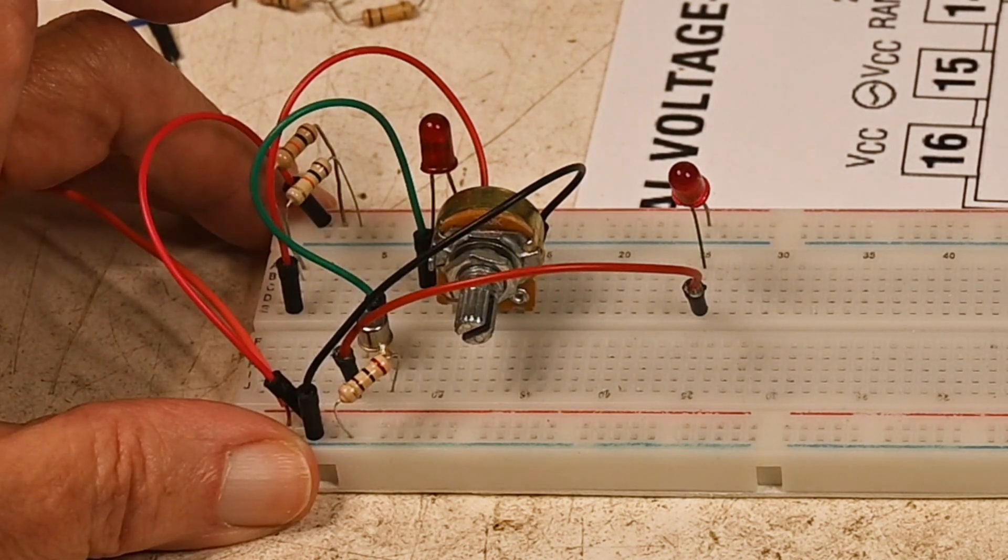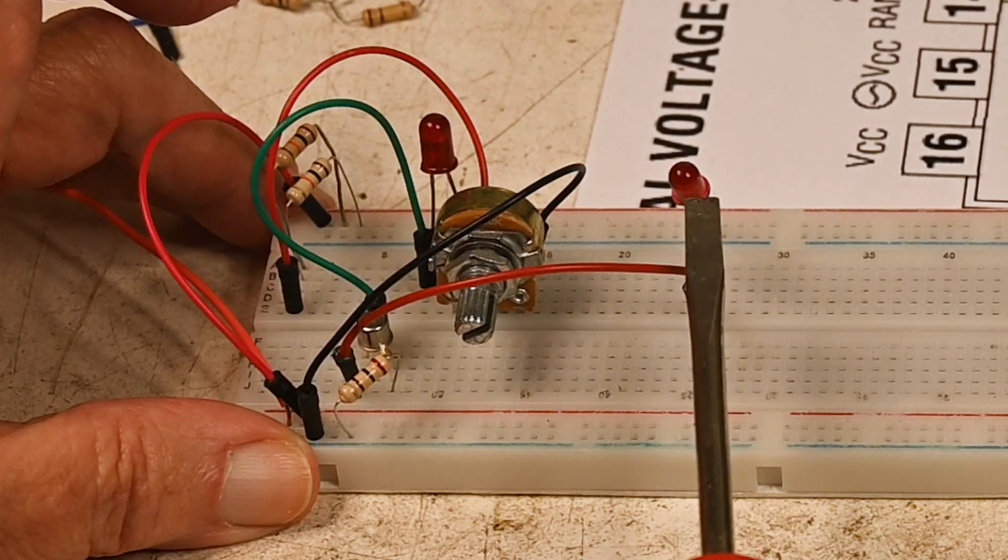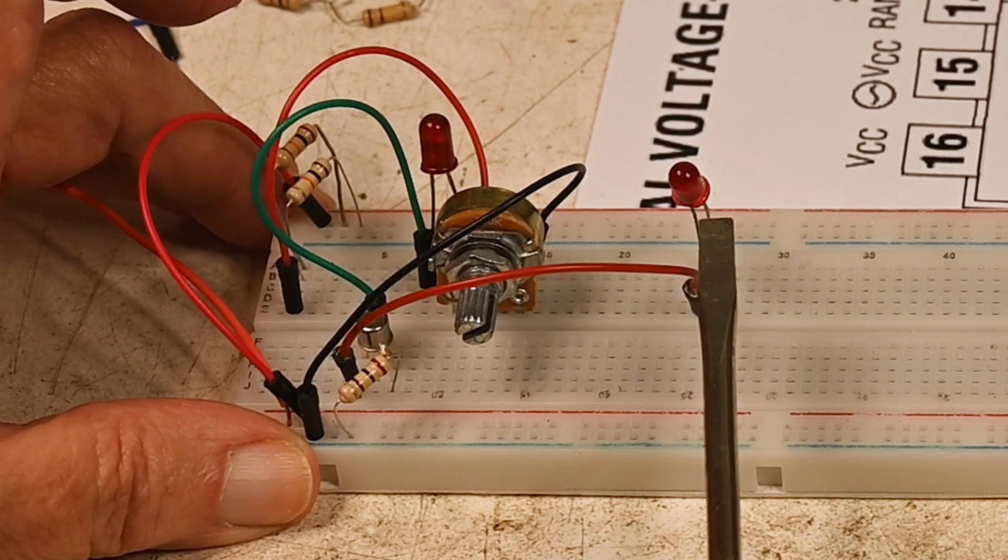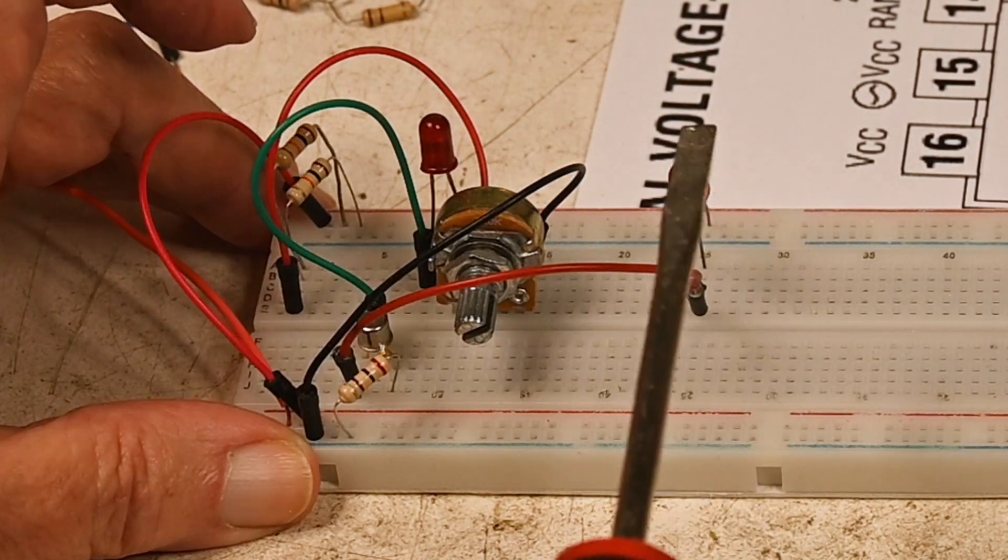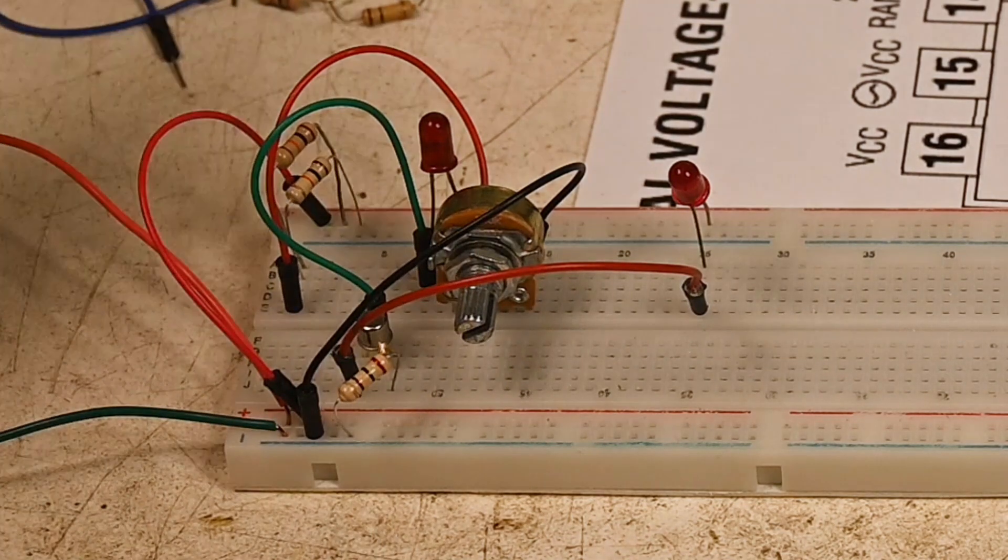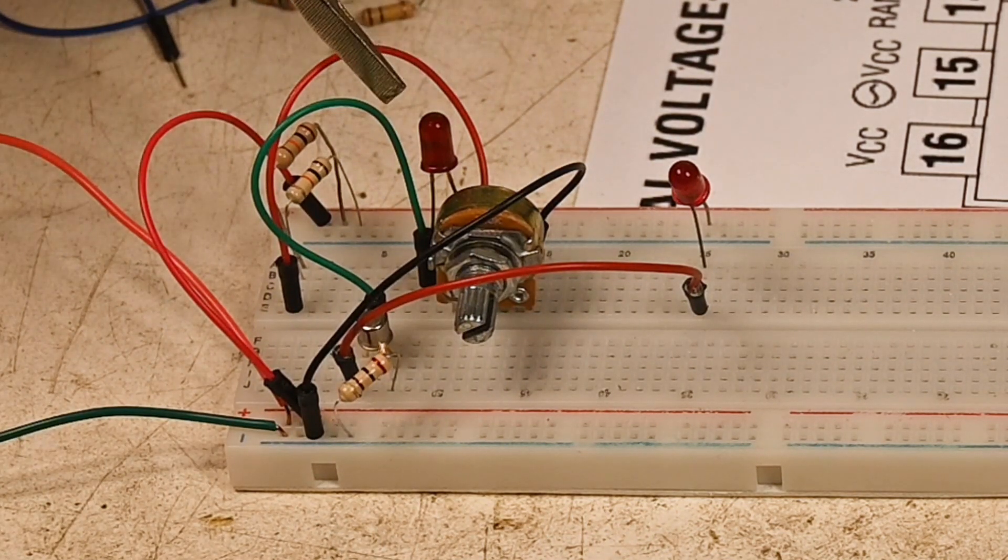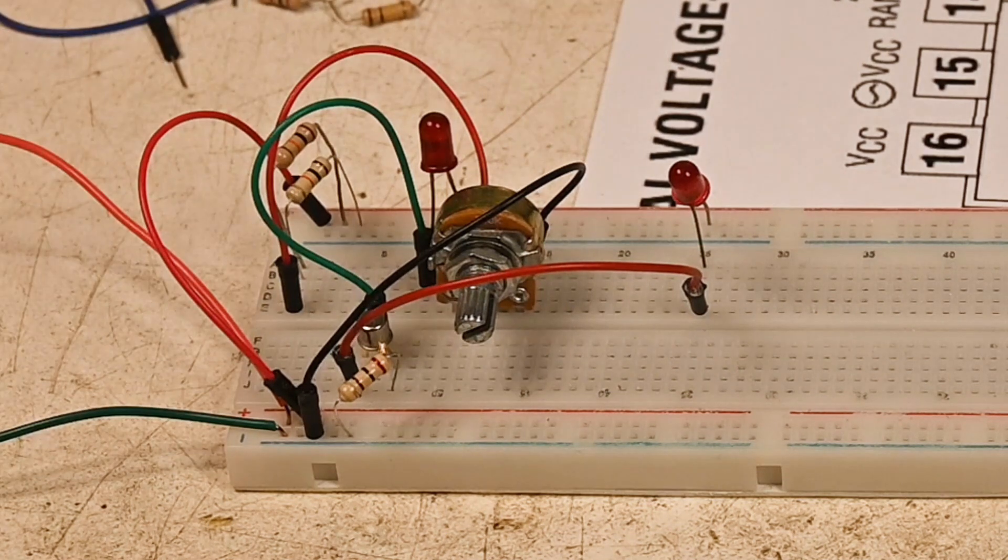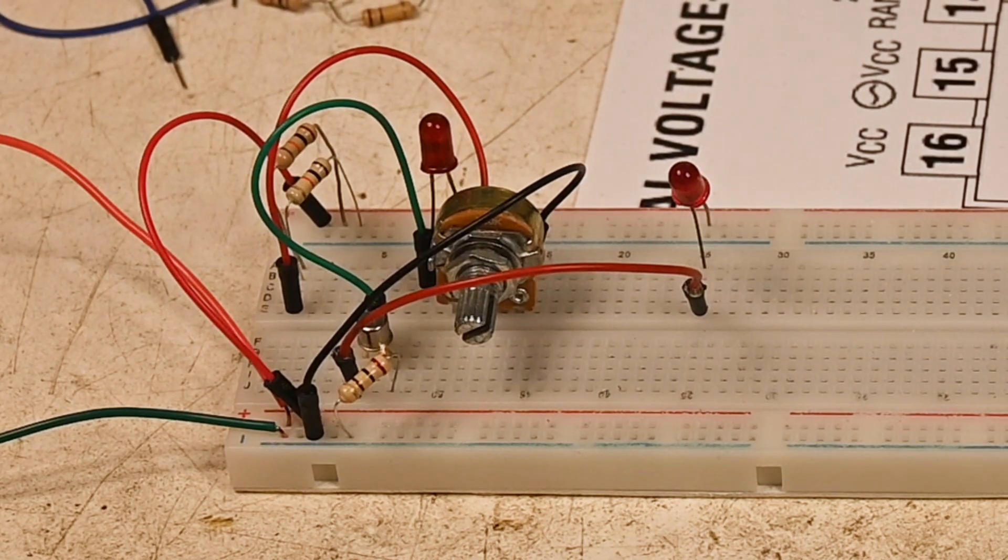Now, this is in the collector circuit of the transistor. This one is in the base circuit of the transistor.